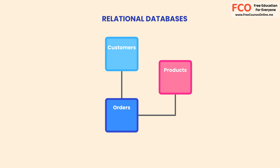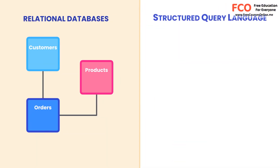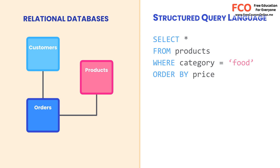Each table stores data about a specific type of object, like customer, product, order, and so on. SQL is the language that we use to work with these relational database management systems. It looks like this. We use SQL to query or modify our data. In this course, we're going to learn everything about this powerful language.